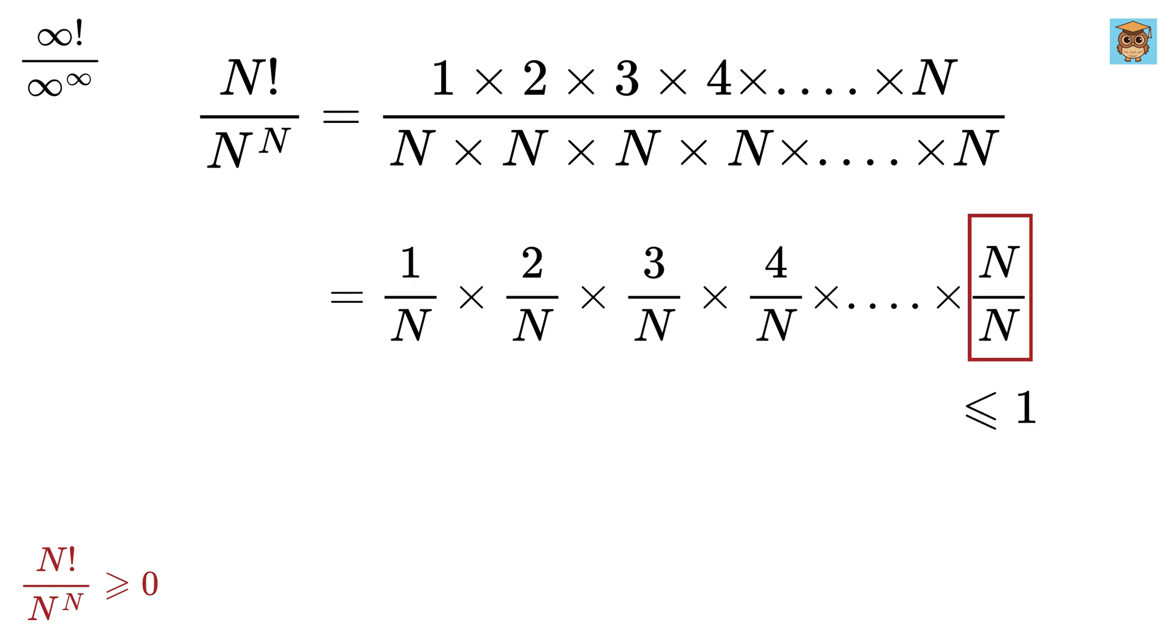It will be less than or equal to 1, right? Then this ratio will also be less than or equal to 1. Similarly, this will also be less than or equal to 1, and then this. Leave this ratio for now. Now, all these ratios are less than or equal to 1, so their overall multiplication will also be less than or equal to 1.